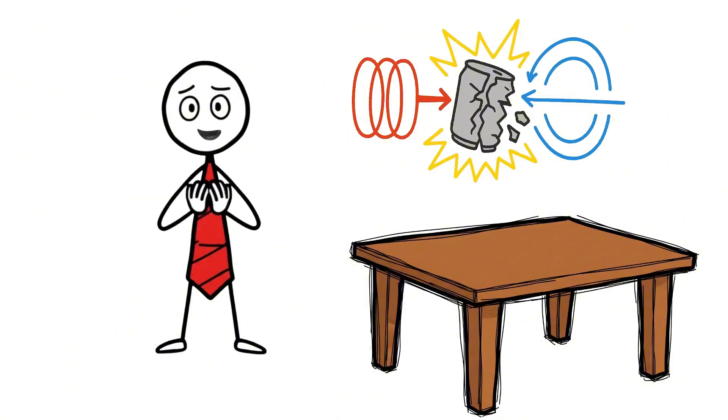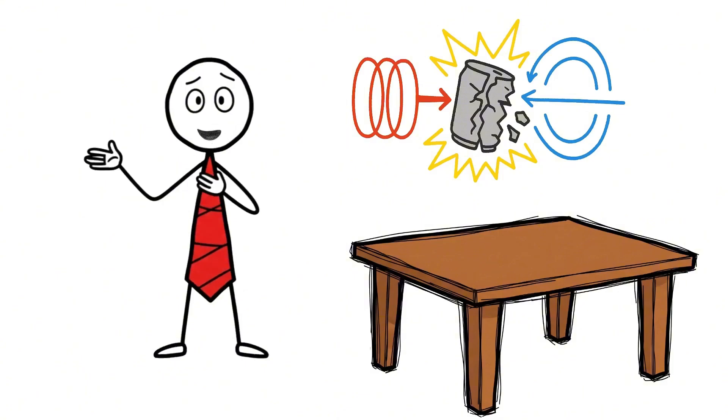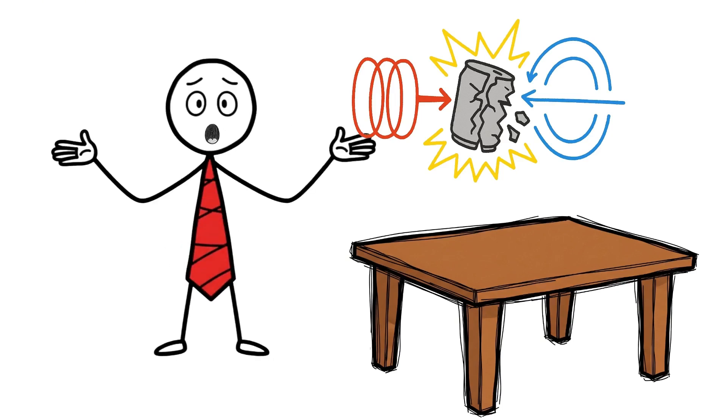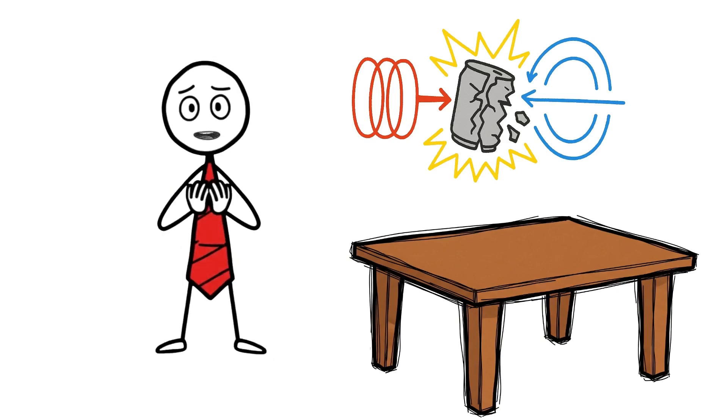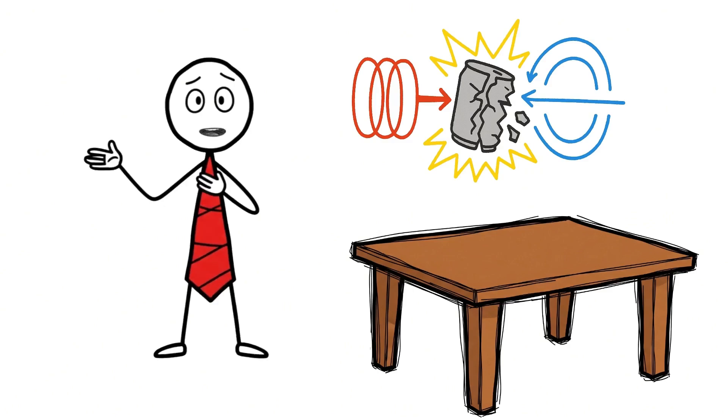while the can's induced field pushes outward. These opposing forces clash with immense power, tearing the aluminum can apart from the inside until it explodes.